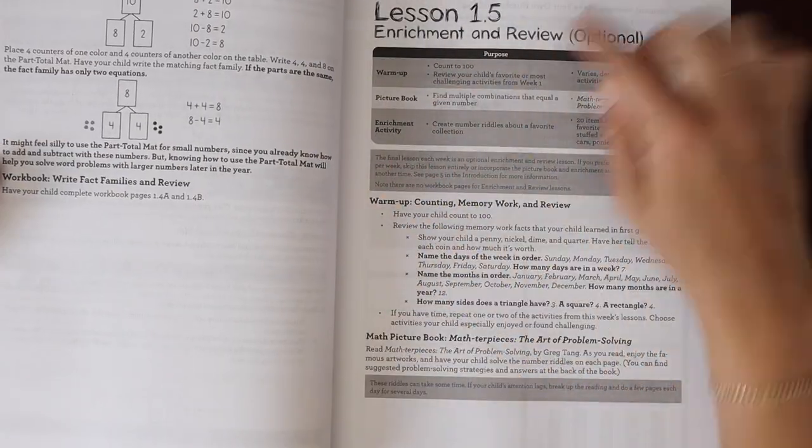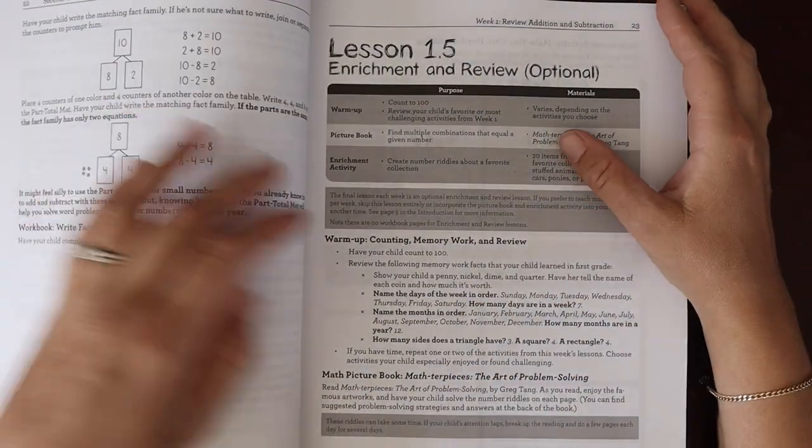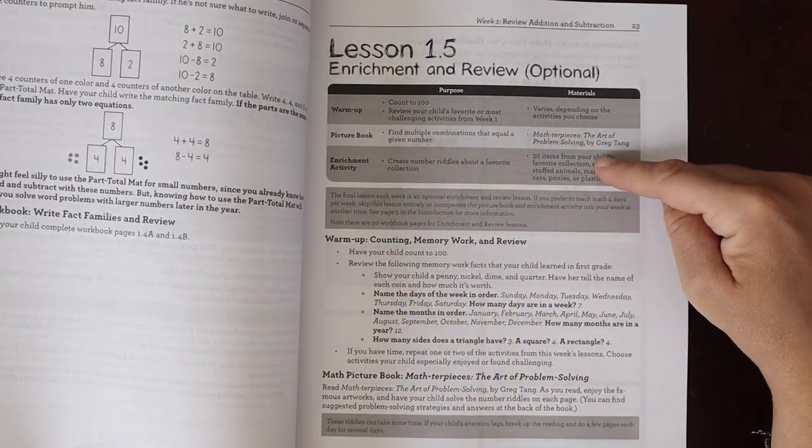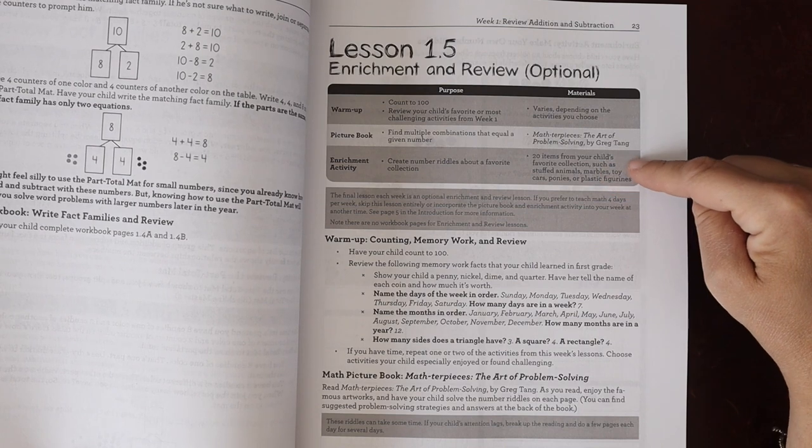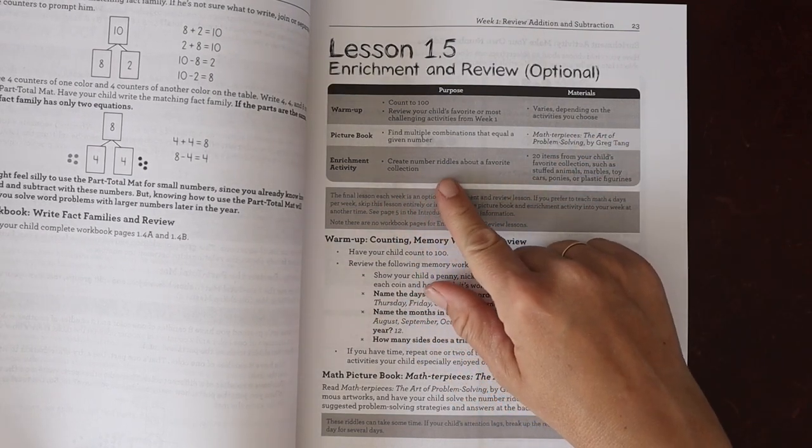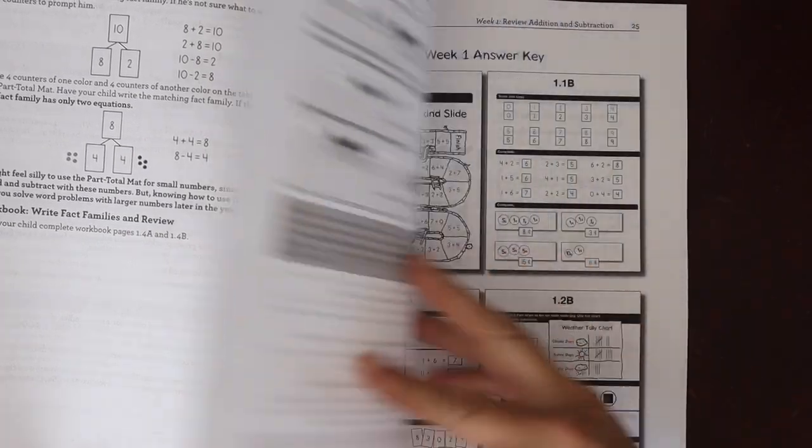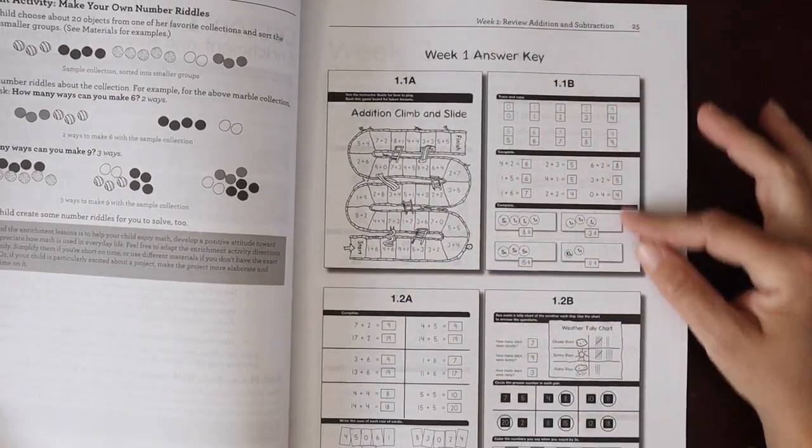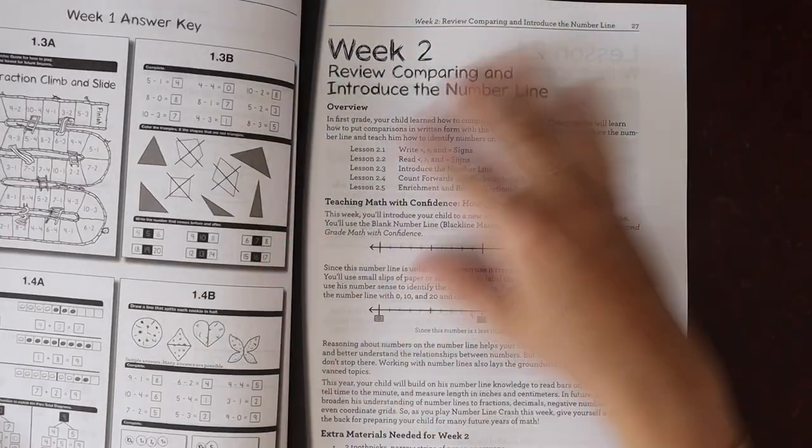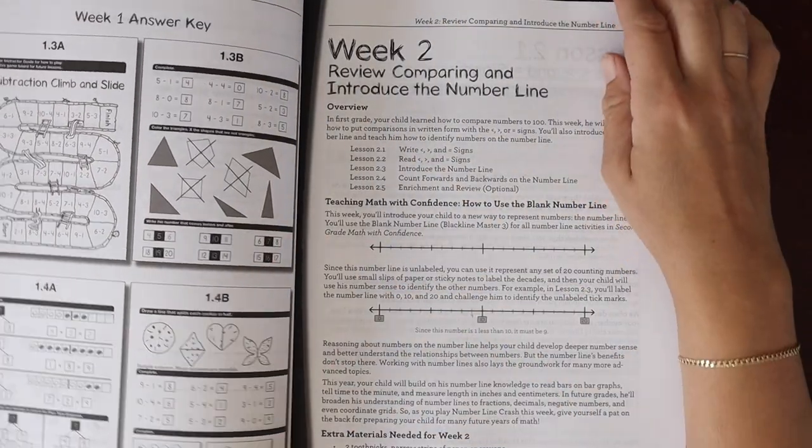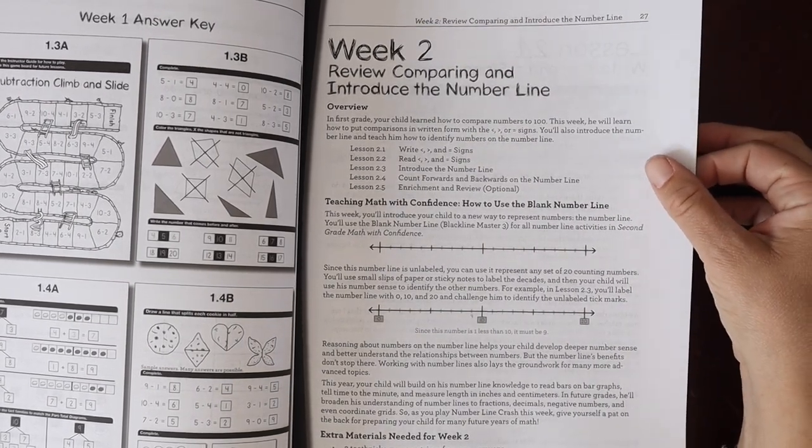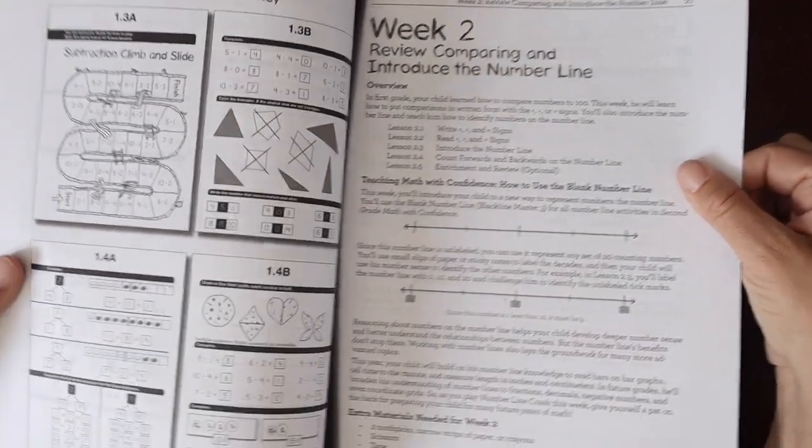And then we keep going for lesson 1.2, 1.3, and then here is our enrichment and review lesson for the first unit. We have the warm-up still and then it talks about a picture book we can use, Math-terpieces: The Art of Problem Solving, and then your enrichment activity is to create number riddles about a favorite collection. And then they have the answer key in here for the workbook, which I'll show you in a minute. The second grade workbook does have two workbook pages per lesson, which is - I think the first grade, I know the kindergarten only has one, I think first grade also only has one workbook page.